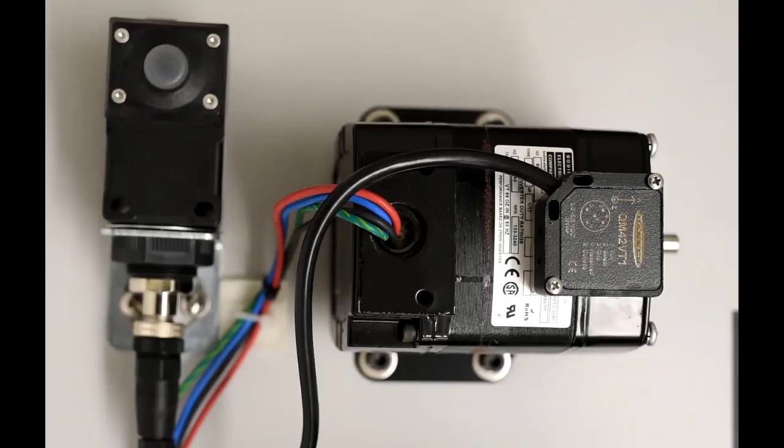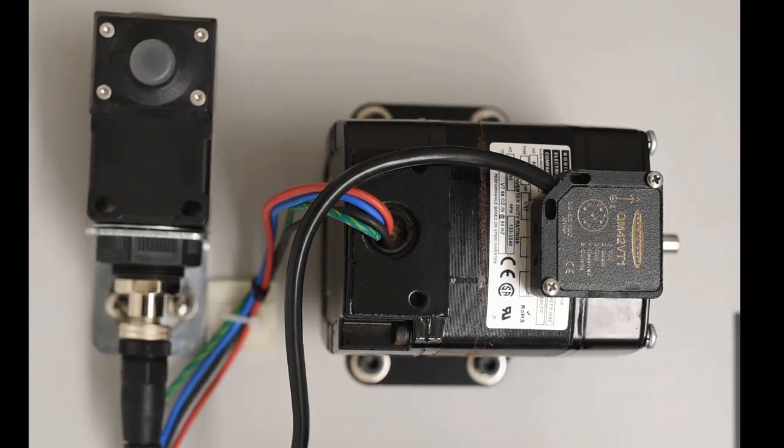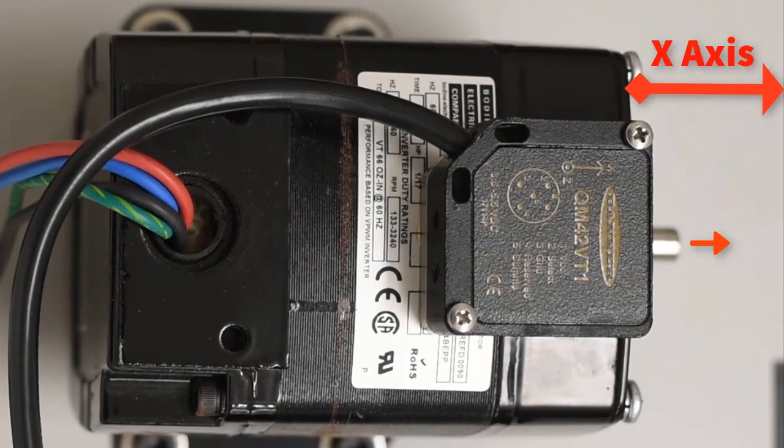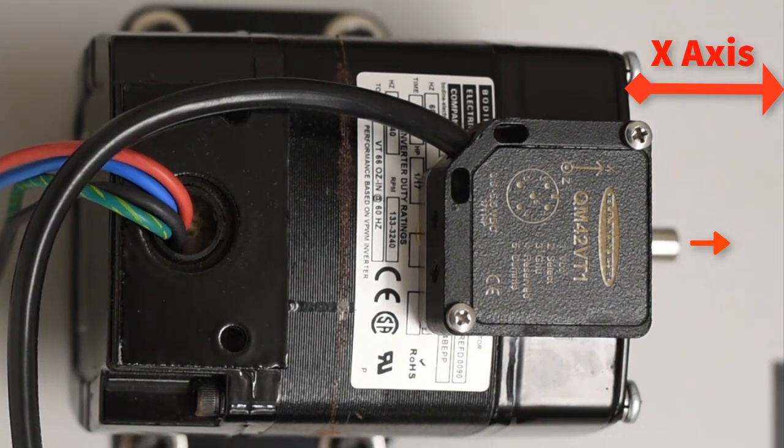Here we're showing you the proper way to connect the vibration and temperature sensor to a motor. Notice the x-axis of the sensor and the shaft should be parallel with each other as shown.